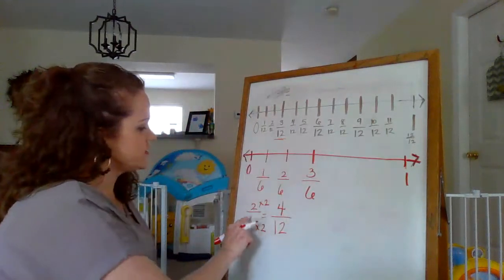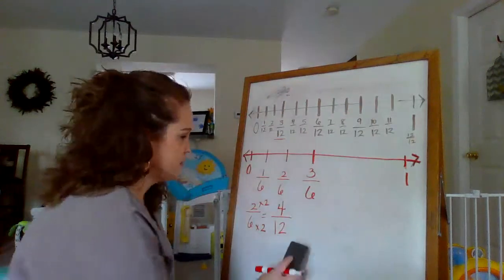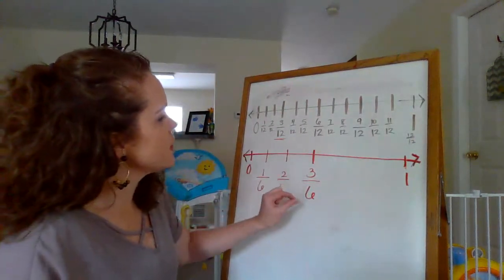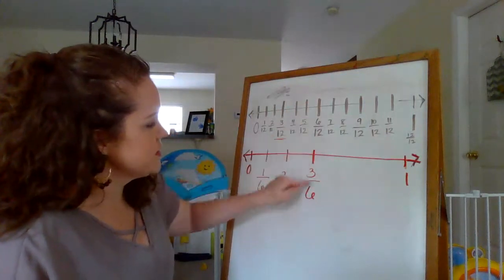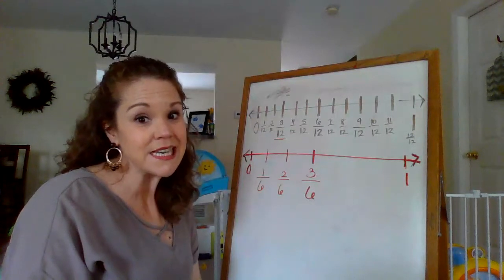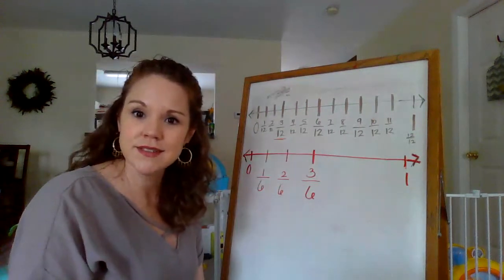So 2 sixths is actually equivalent to 4 twelfths. All right. Let's test out our next one. 3 sixths. That lines right up with 6 twelfths. Hey, isn't 6 half of 12? Isn't 3 half of 6? Yes.